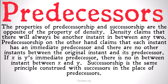The properties of predecessorship and successorship are the opposite of the property of density. Density claims that there will always be another instant between any two. Predecessorship, on the other hand, claims that each instant has an immediate predecessor and that there are no other instants between the original instant and its predecessor. If X is Y's immediate predecessor, there is no in-between instant between X and Y. You should see how this is kind of a denial of density.